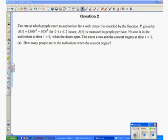People are coming into the auditorium. It's measured in people per hour, and it's like a velocity. We've got a speed at which people are coming in. No one's in the auditorium when we start watching at time zero, and at time equals two, the concert begins.